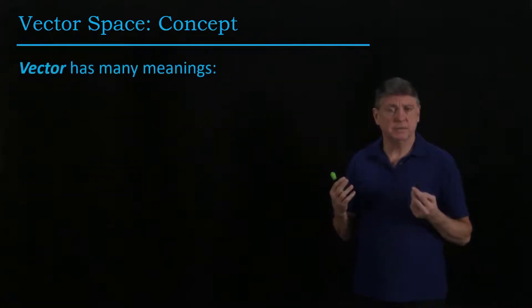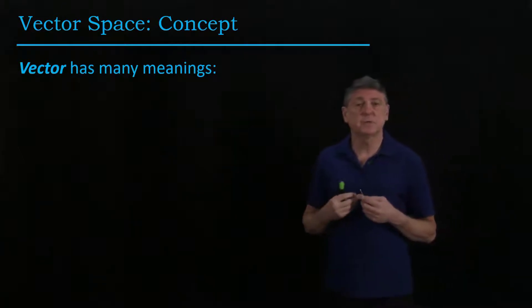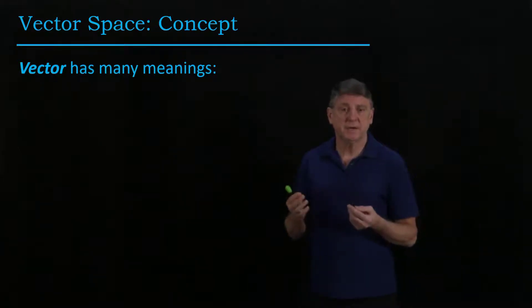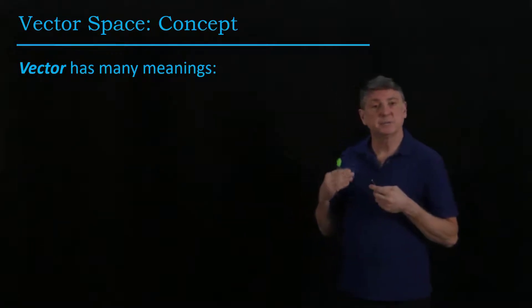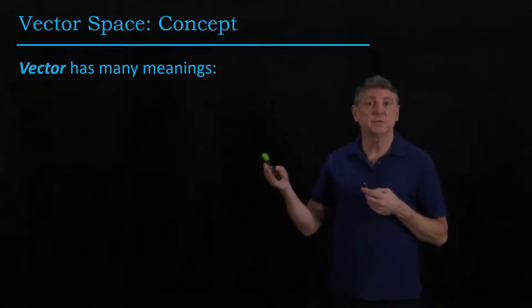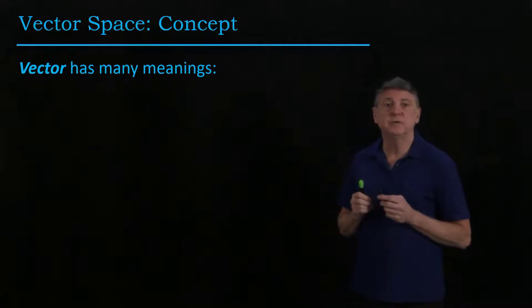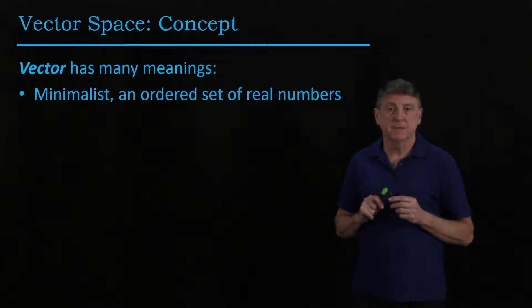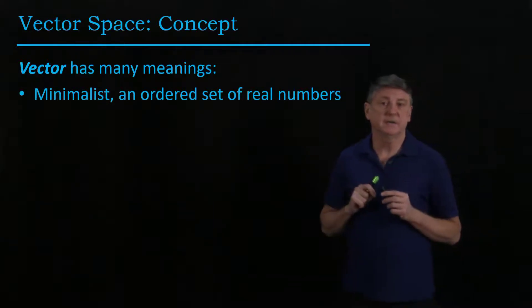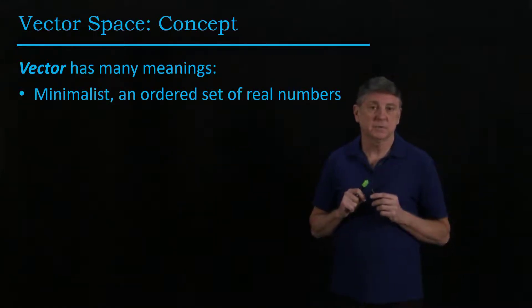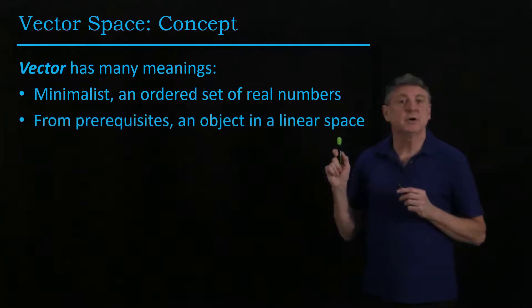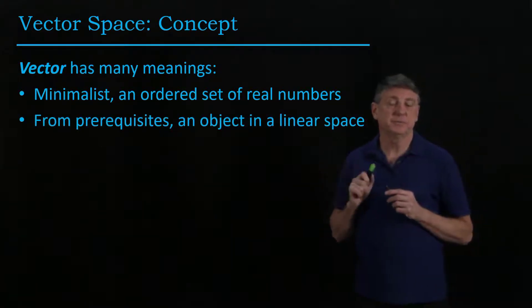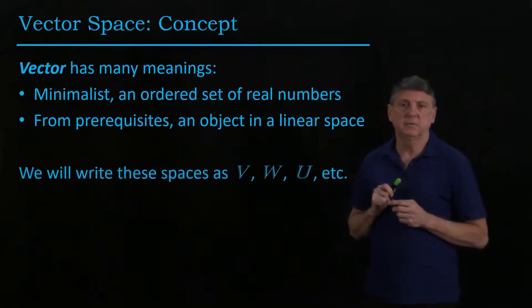So here's the concept. Vector has many meanings. It comes from the Latin vectus, which means to carry. And in advanced geometry, a vector carries us from one point in a curved space to another point in a curved space. A minimalist idea of a vector is an ordered set of real numbers. We'll go beyond that, and we'll say that it's an object in a linear space. And now we're going to have to explore what we mean by linear in greater detail.